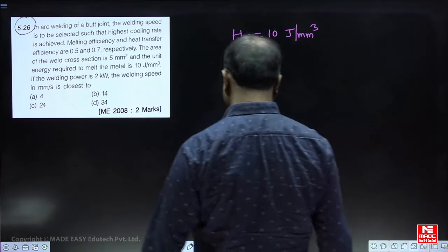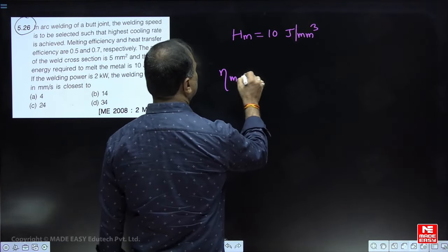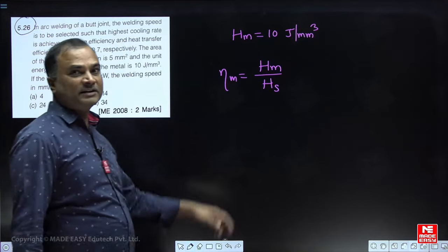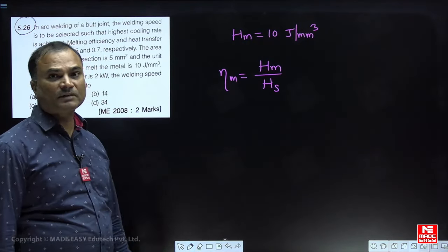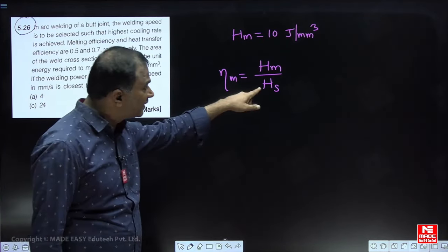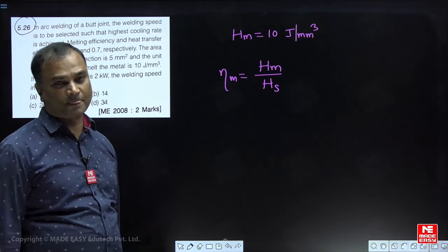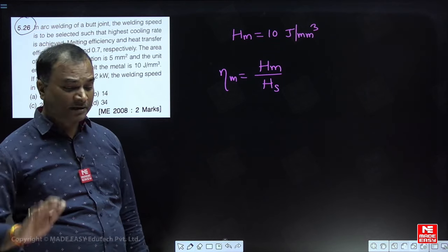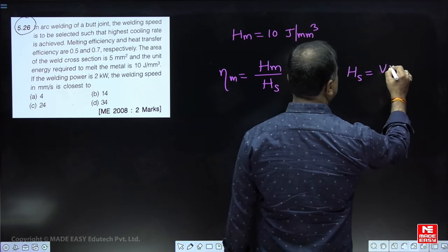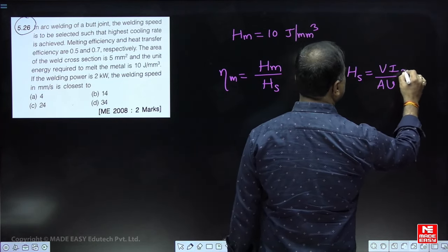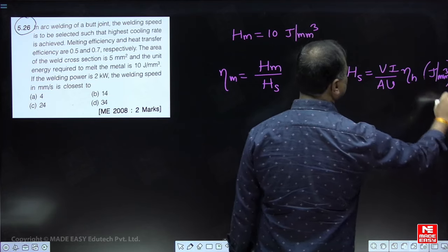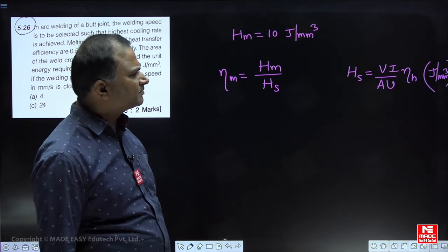To calculate melting efficiency, heat is the ratio of heat required to melt divided by heat supplied. Heat required to melt is given as 10 joules per mm³, so we need to substitute heat supplied also in joules per mm³. Heat supplied equals V×I divided by area×welding speed, multiplied by heat transfer efficiency — giving units of joules per mm³ (per unit volume).